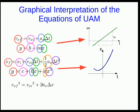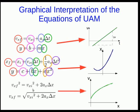The third one is a little more difficult. If you rearrange it like this, you can see that this is saying that v as a function of position is like a square root.